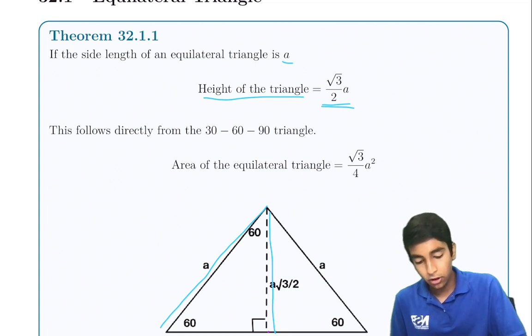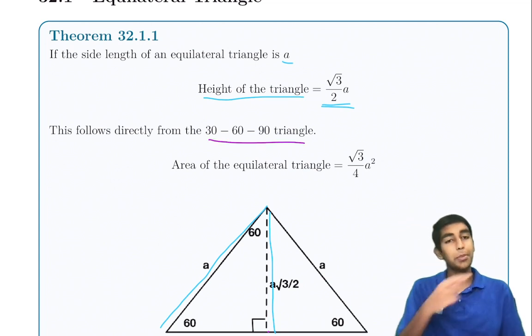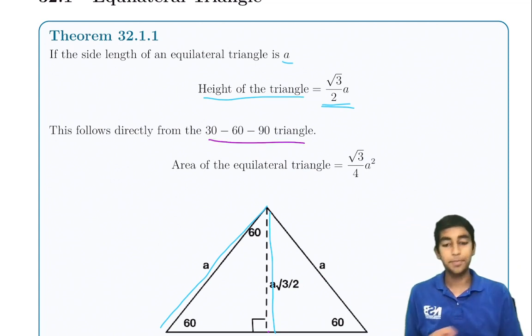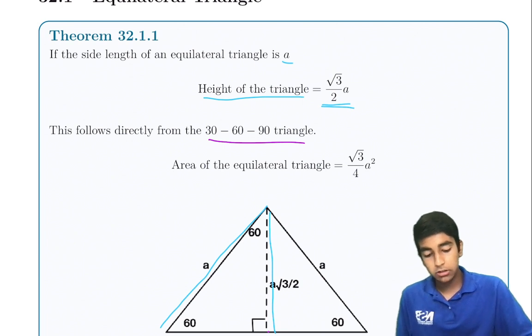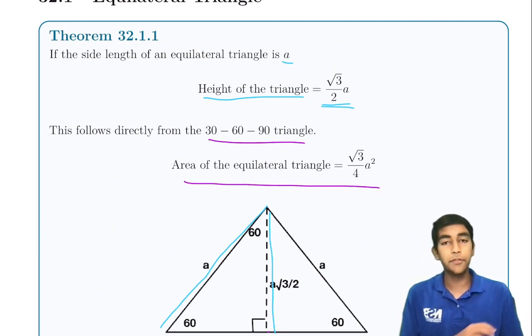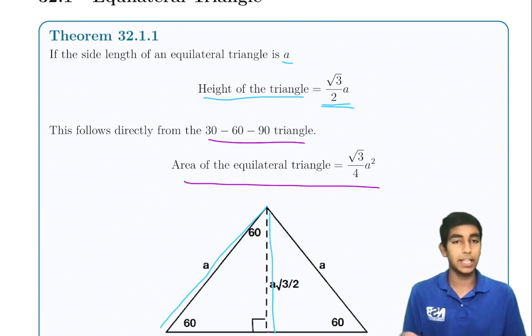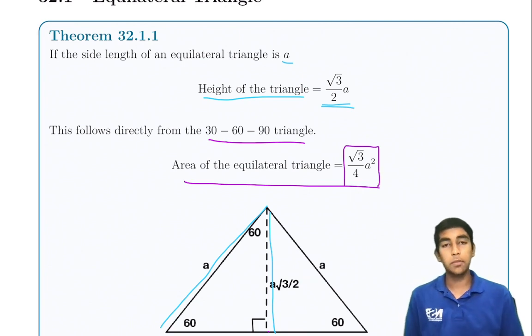The height formula follows from 30-60-90 triangles, which we'll be exploring later. The area of an equilateral triangle is (√3/4) × s², where s is the side length. That's another formula that will save you a lot of time.